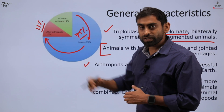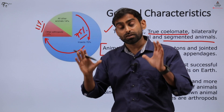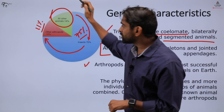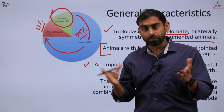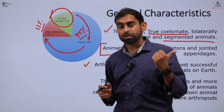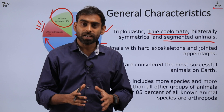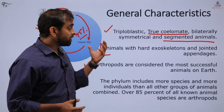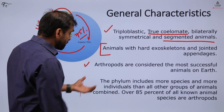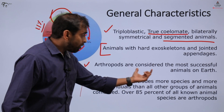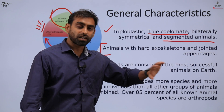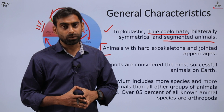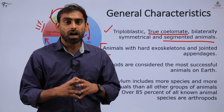If you look at some statistics, across the entire animal kingdom, roughly 75% of all organisms in terms of number are insects alone, and an additional 11% are other arthropods besides insects. So roughly around 86% of all species across the globe belong to this phylum. The rest of the non-arthropod organisms are merely around 14–15%. This phylum includes more species and more individuals than all other groups of animals combined.